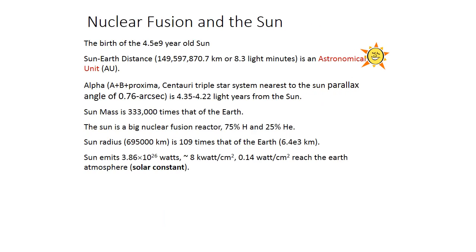Nuclear fusion and the sun: the 4.59-billion-year-old sun is 149,597,870.7 km — or 8.3 light minutes — from Earth, which is one astronomical unit. The Alpha Centauri triple star system, nearest to the sun, is 4.22 to 4.35 light years away. The sun's mass is 333,000 times that of the Earth, making it a big nuclear fusion reactor.